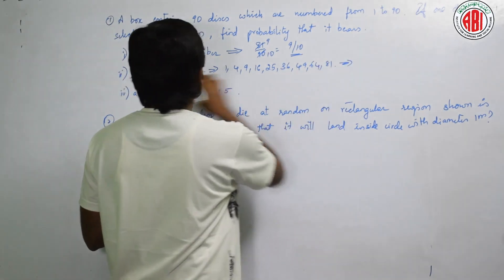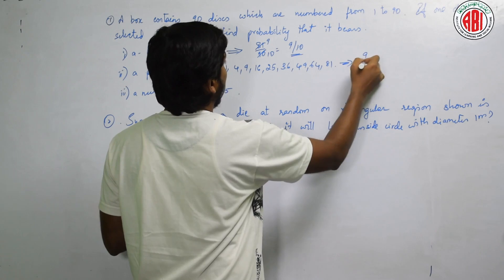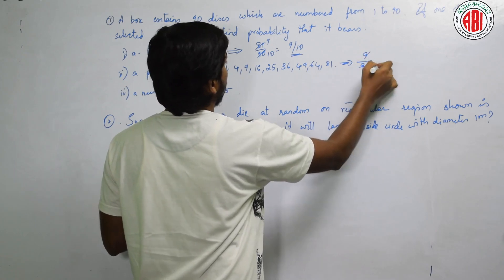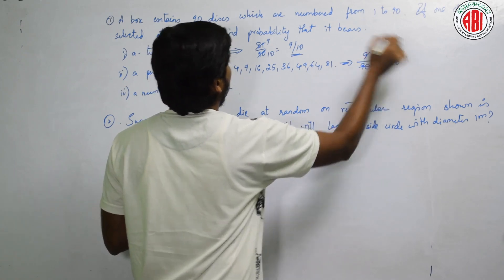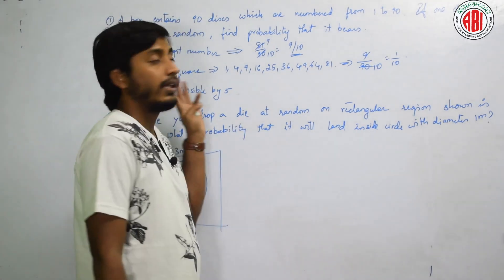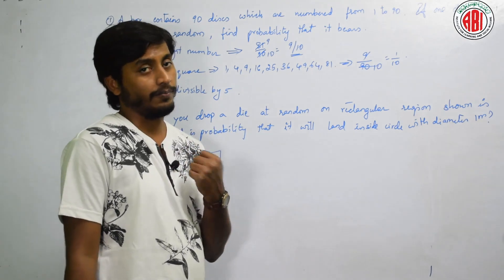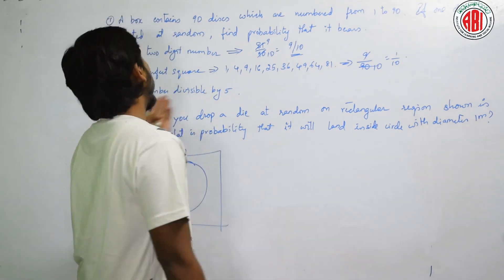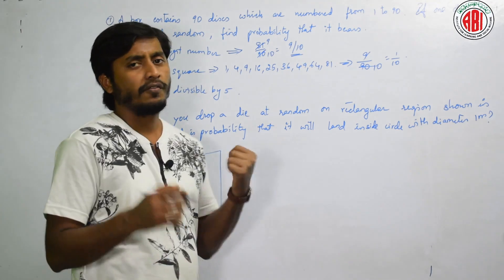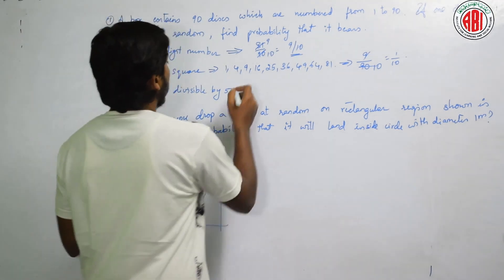Total probability of getting a square number is? 9 by 90, that is 1 by 10. Samaj me aage na? We have to know whether a number is a perfect square or not. Next, a number divisible by 5. 5 ka table me jane wala number. Ye to both aate hai.